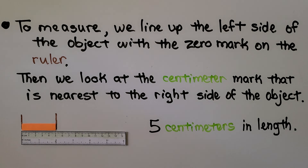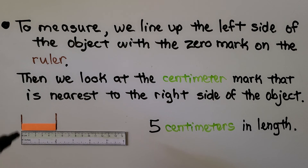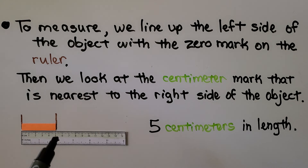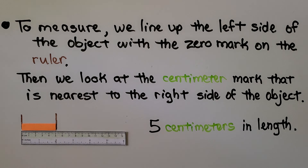For a quick review — to measure, we line up the left side of the object we're measuring with the zero mark on the ruler. Then we look at the centimeter mark that is nearest to the right side of the object. It's at 5, so we know the orange line is 5 centimeters long.